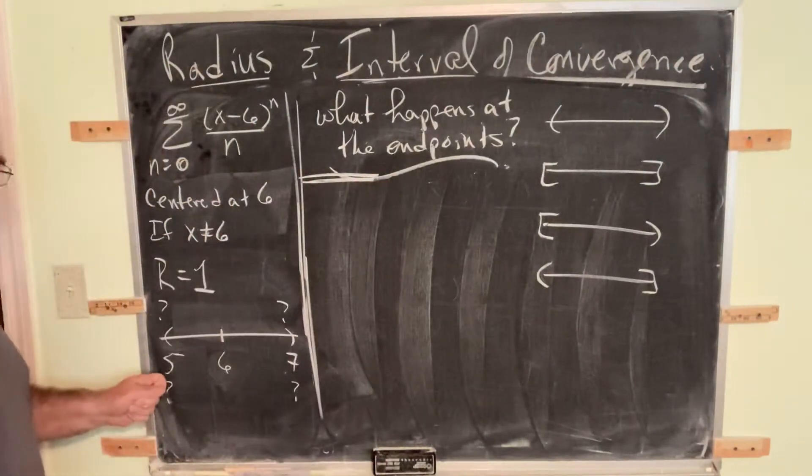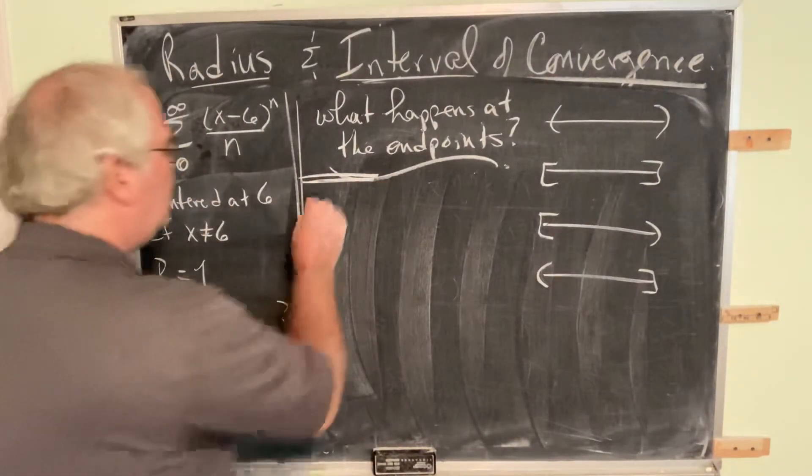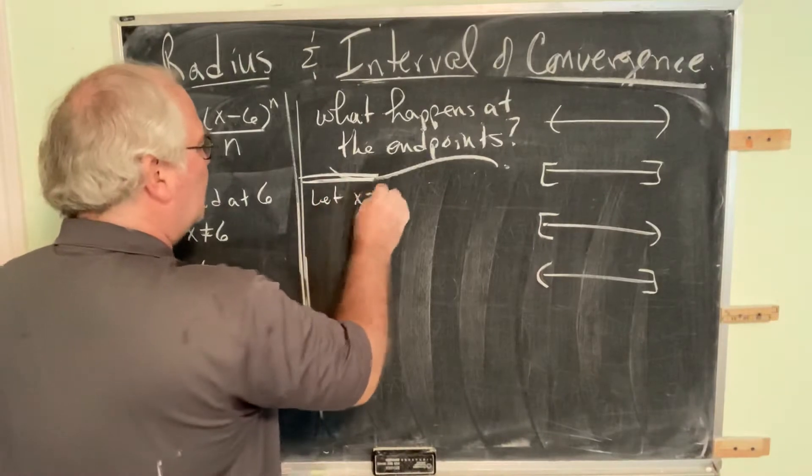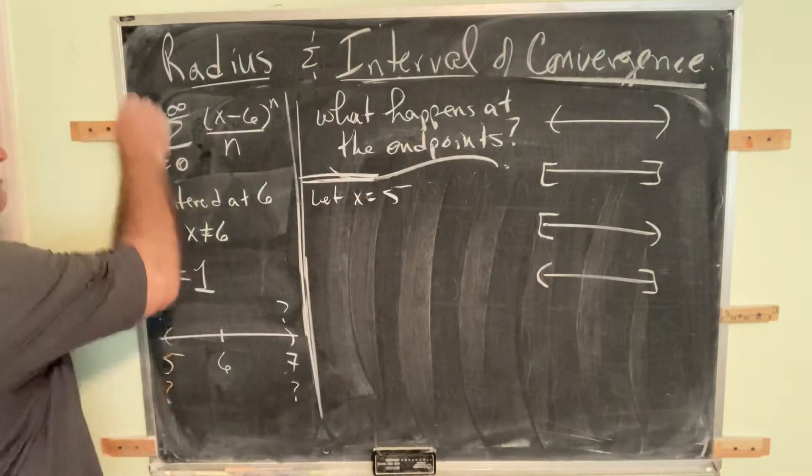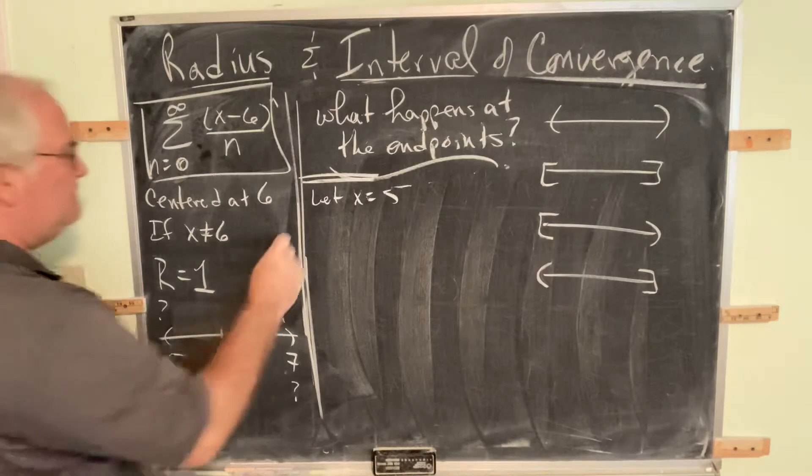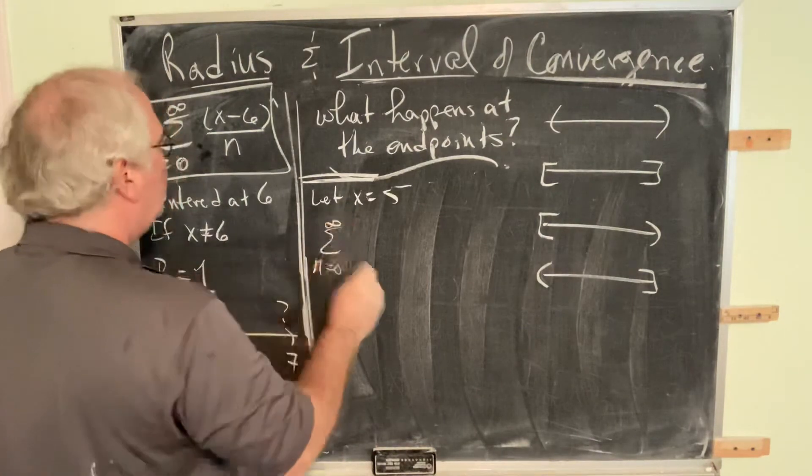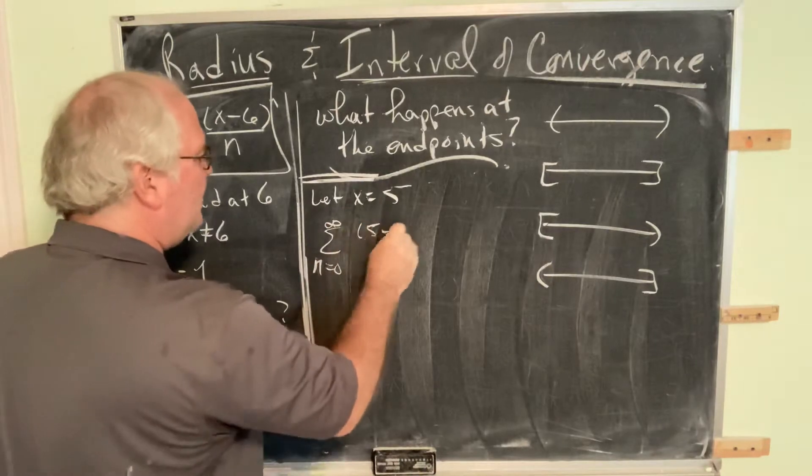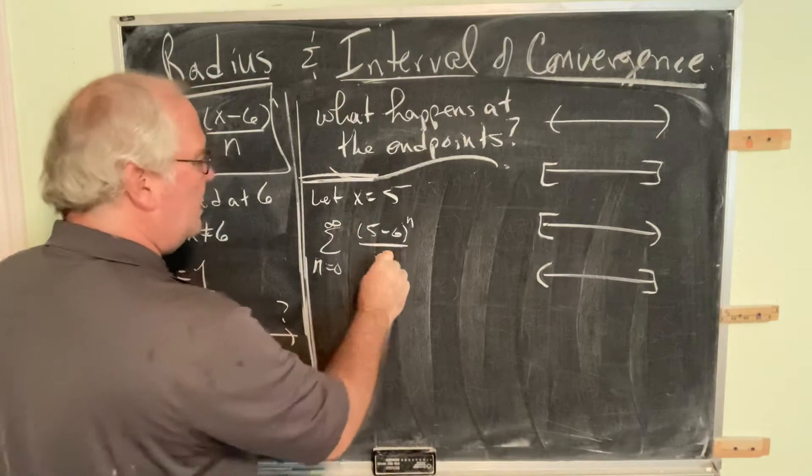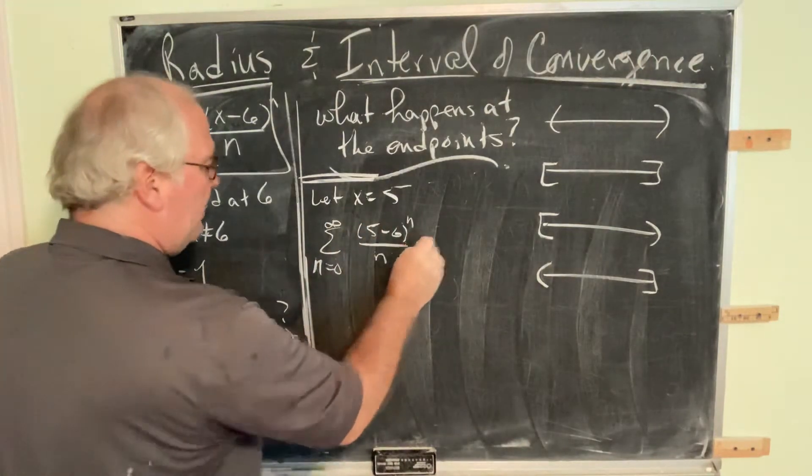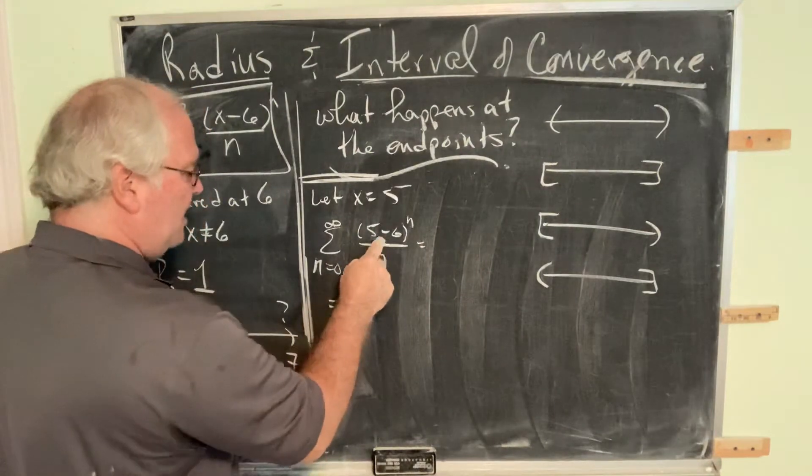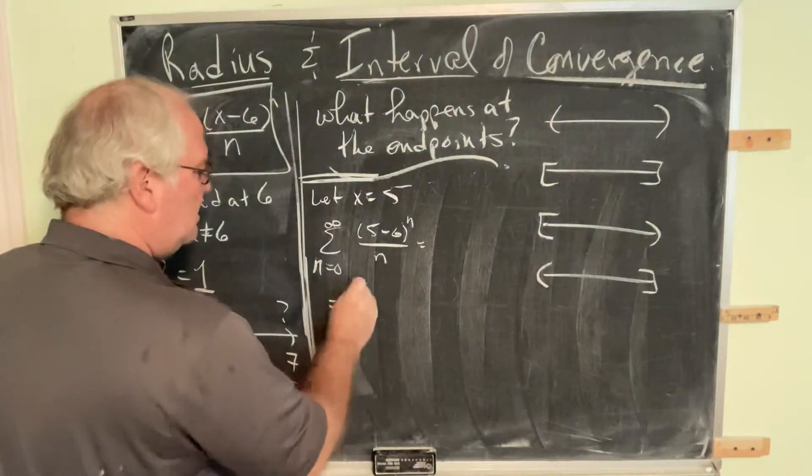Here's what you do. You choose the endpoint. Let x equal 5. Plug x equal 5 into this original expression. If x equals 5, then we have (5-6)^n over n. And we can simplify that because now we know what this value is.